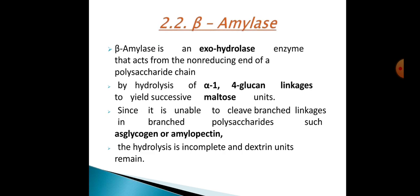Beta-amylase is an exohydrolase enzyme that acts from the non-reducing end of a polysaccharide chain by hydrolysis of alpha-1,4 glucan linkages to yield successive maltose units. Since it is unable to cleave branched linkages in branched polysaccharides such as glycogen or amylopectin, their hydrolysis is incomplete and dextrin units remain.